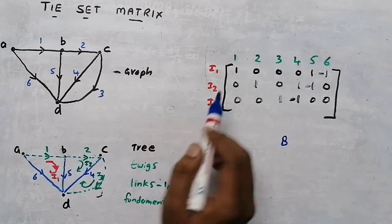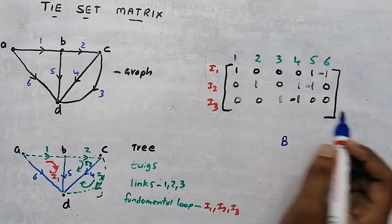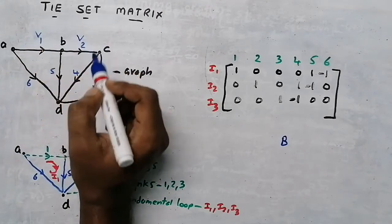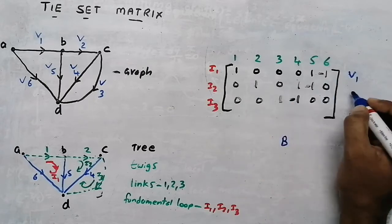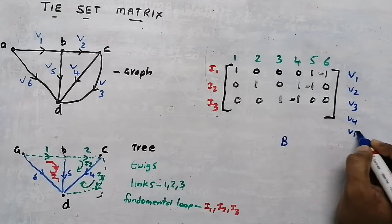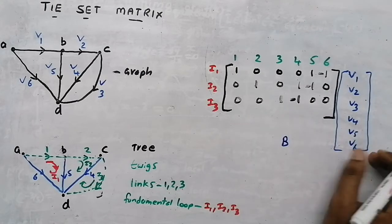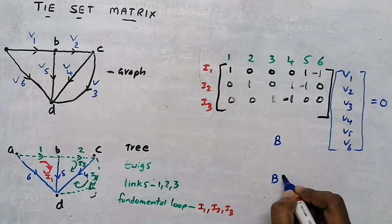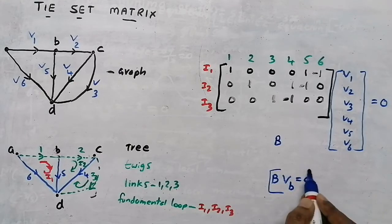Now, if you multiply the tie-set matrix by the branch voltages — V1, V2, V3, V4, V5 and V6 — you get 0. This is a property: tie-set matrix B multiplied by branch voltage V_B equals 0.